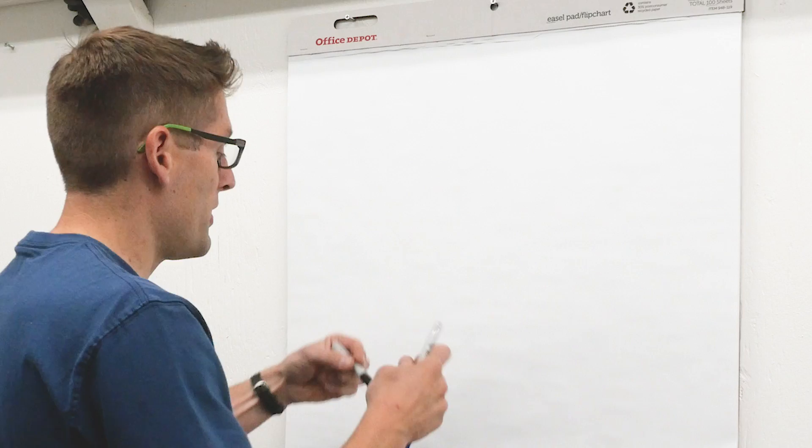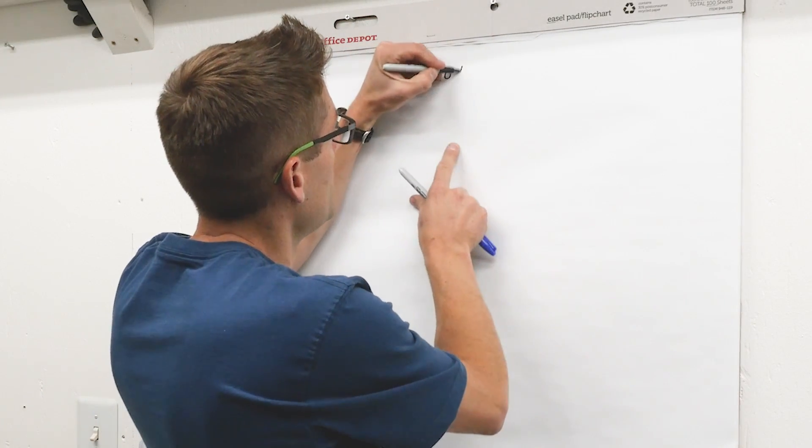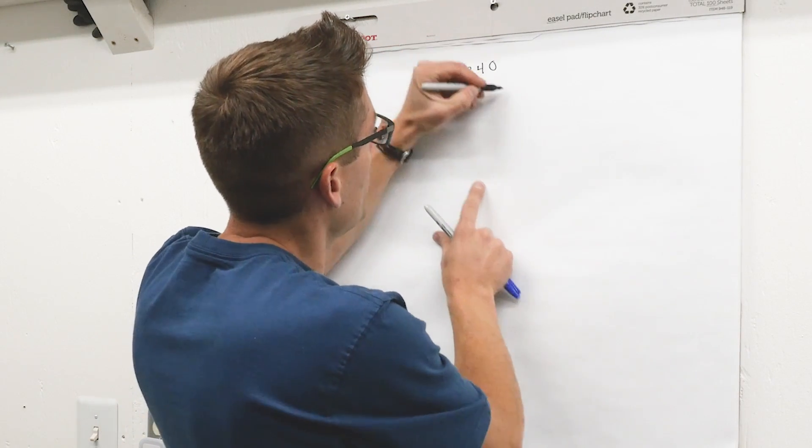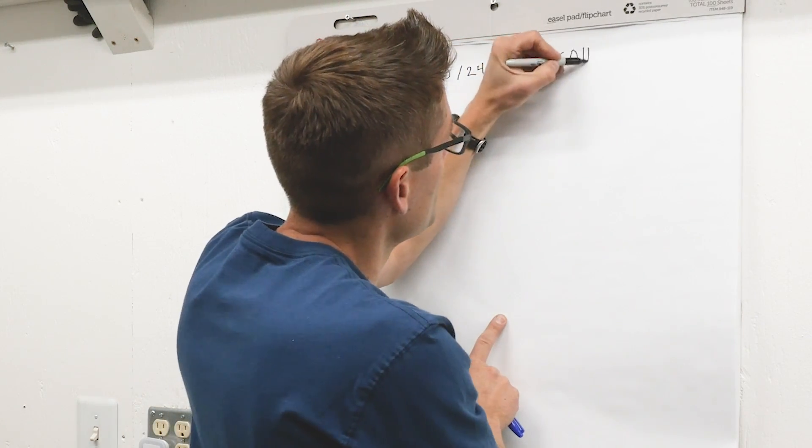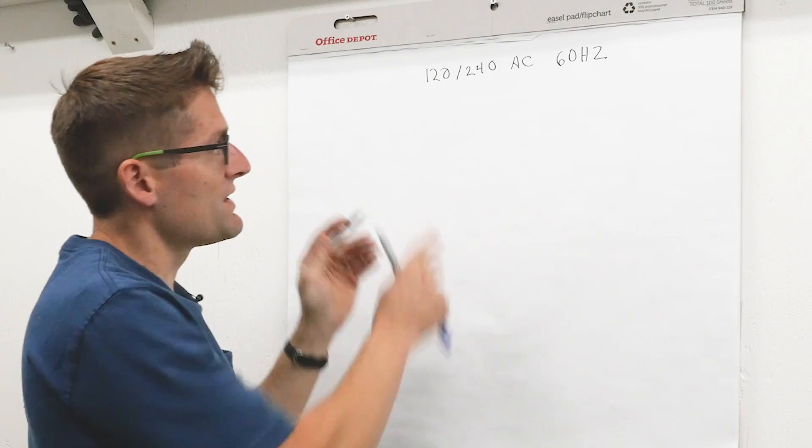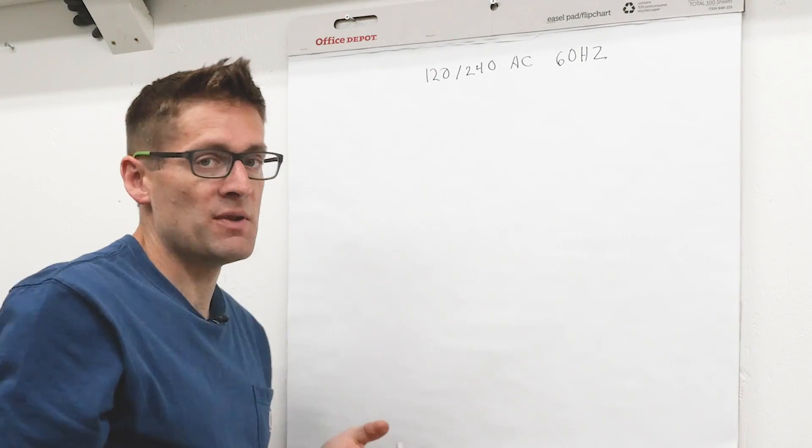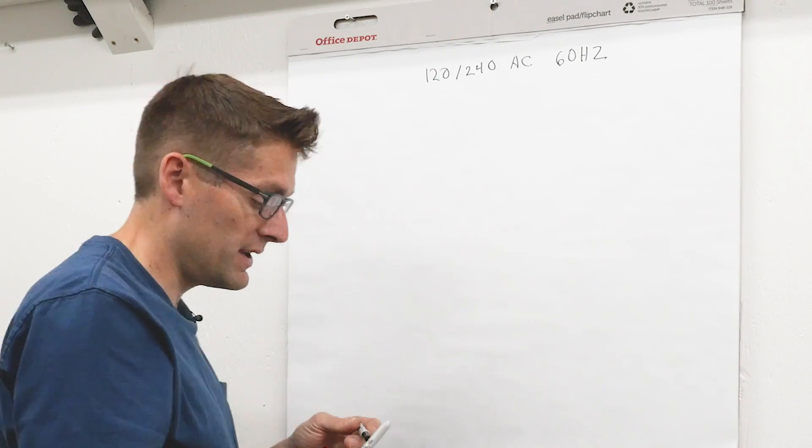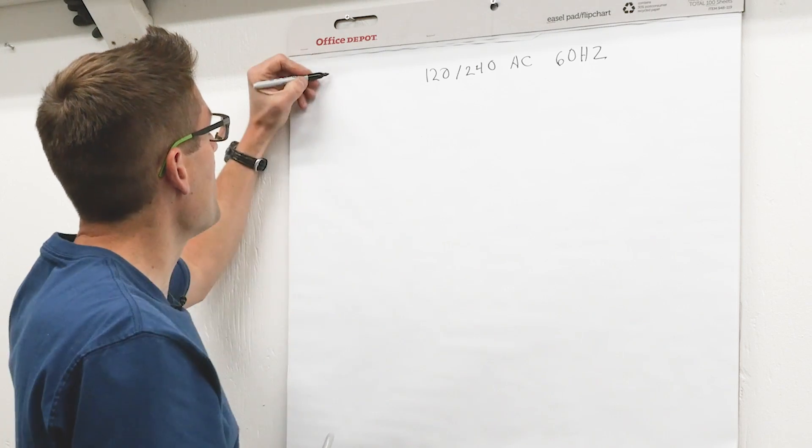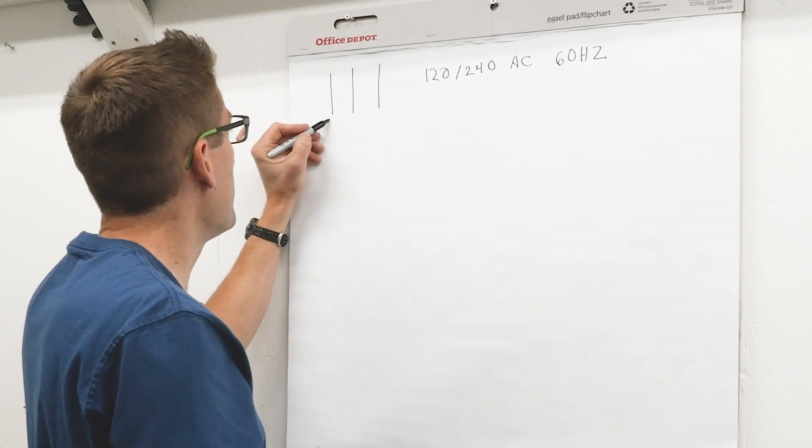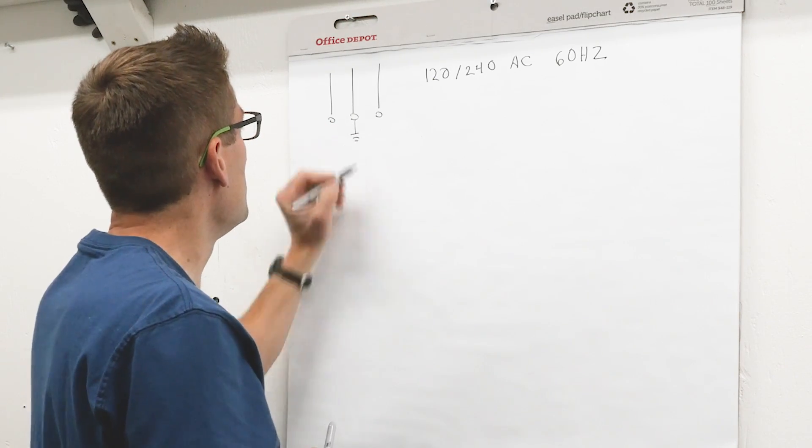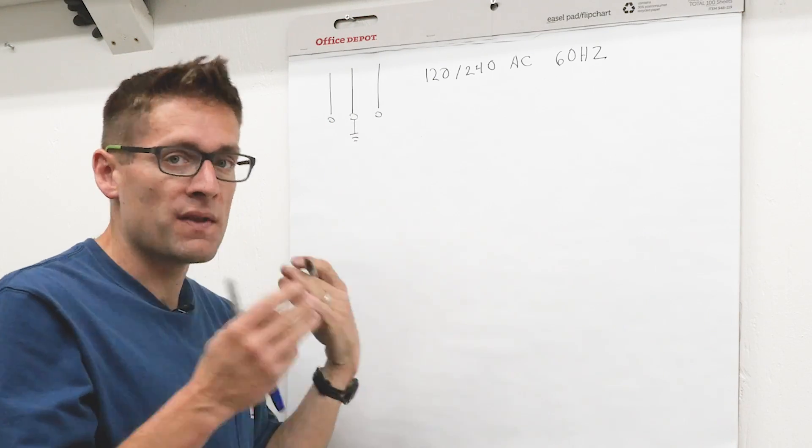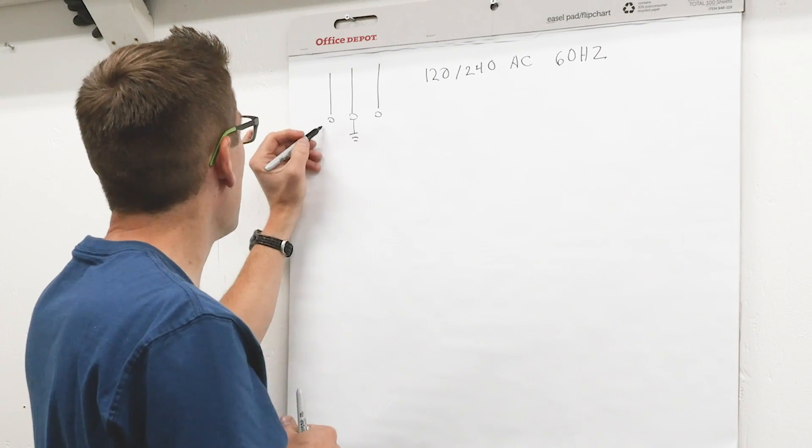Let's talk single phase power. So let's take a look at North American 120/240 volt AC power which alternates at 60 hertz. This is different around the world. It could be 50 hertz. The voltage could be slightly different but the principles really are the same and coming into your house you have three things. You have two hot legs and then you have a neutral and the neutral is essentially a ground with some subtle differences. So we're going to call this L1, L2.